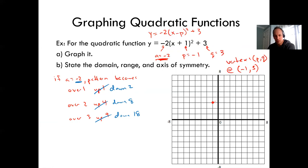Starting at the vertex, I follow the pattern: over 1 down 2, back to vertex, over 2 down 8. Over 3 down 18 would be off the graph. I do the same thing on the left because parabolas are symmetric — over 1 down 2, over 2 down 8. Now I have enough to sketch the graph. Always put arrows on the ends.